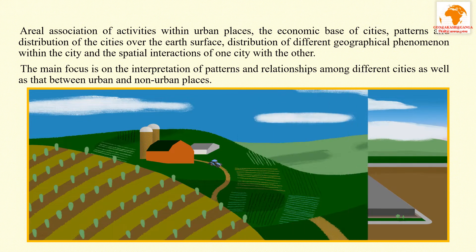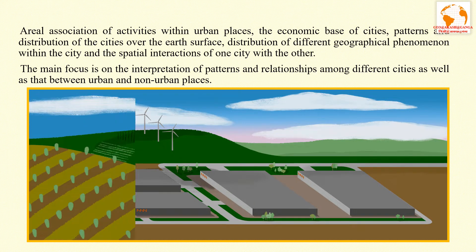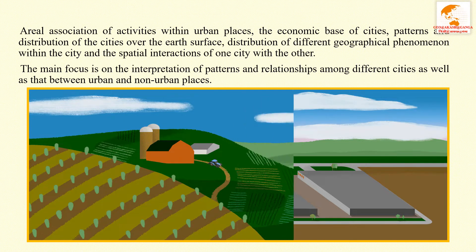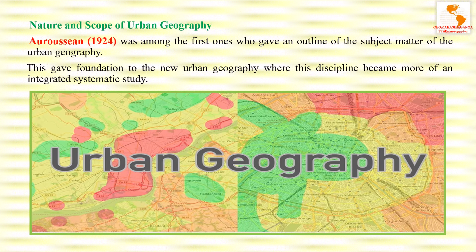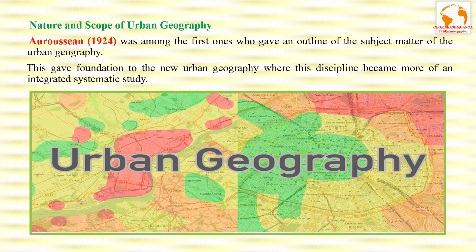Various definitions have been given by different urban geographers to understand the nature and scope of urban geography. Arasios was the first one who gave an outline of the subject matter of urban geography. He viewed that since this part of geography embraces a large part of human geography, it fails to be a specialized subject. After analysis of various approaches, he concluded that the regional study of towns and their functional study of forms are important components of its scope.